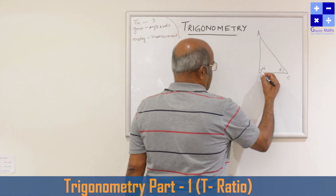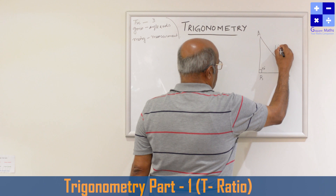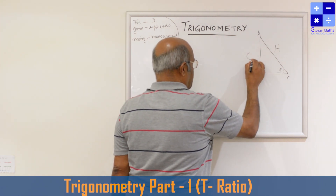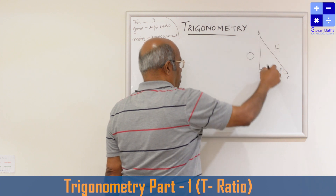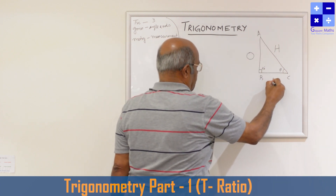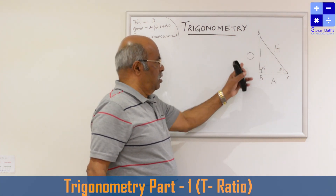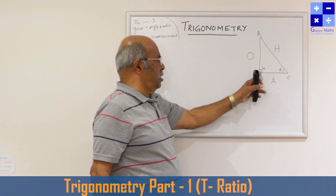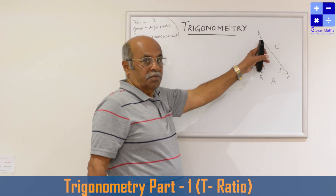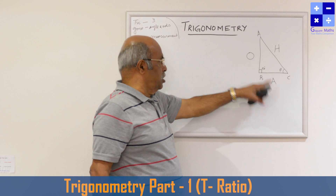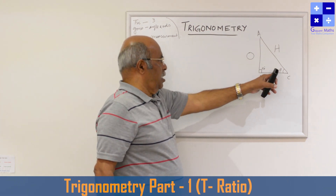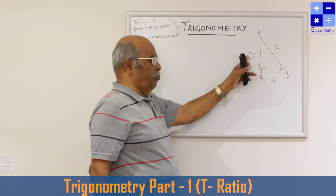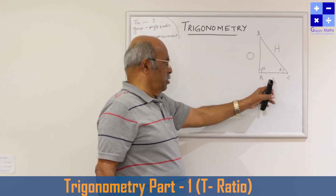In the right angle triangle, the side opposite to 90 degrees is known as the hypotenuse. The side opposite to the angle theta is known as the opposite side. The side adjacent to the angle theta is known as the adjacent side. If you consider the other acute angle as theta, then opposite and adjacent sides would swap accordingly. The side opposite to that angle is the opposite side, and the side adjacent to that angle is the adjacent side.